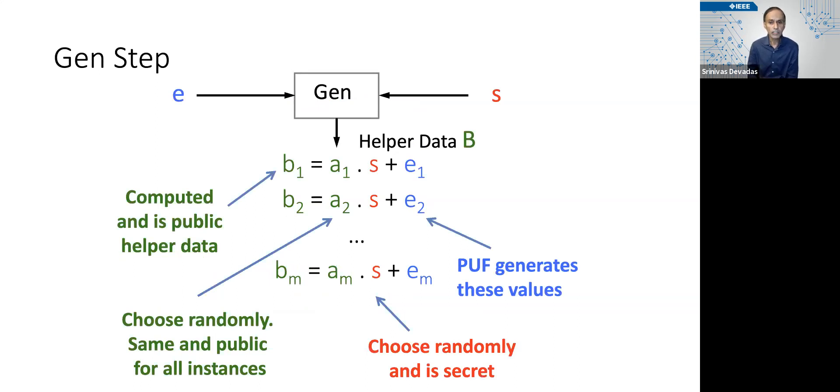And so let's look at the Gen step with a view of looking at the learning parity with noise problem as a way of developing a computational fuzzy extractor. We're going to think of the PUF as generating the noise associated with the eᵢ values. s is randomly chosen, and it's secret. The a's can be fabricated onto the chip across different chips. They can be the same. Obviously, the s is different for the different chips as well as the eᵢs.